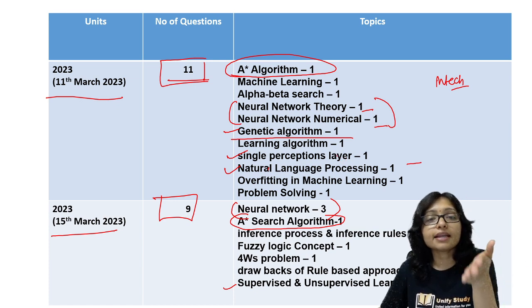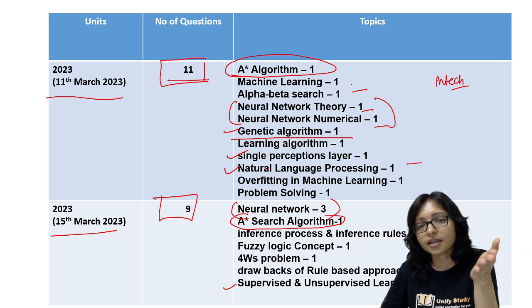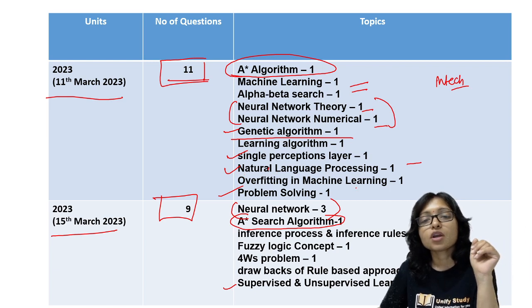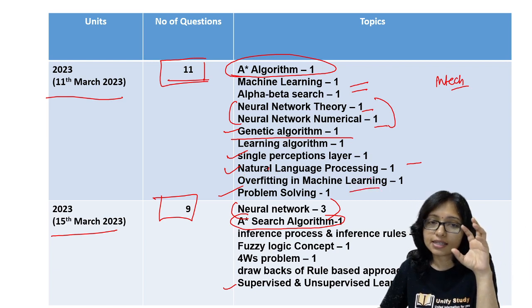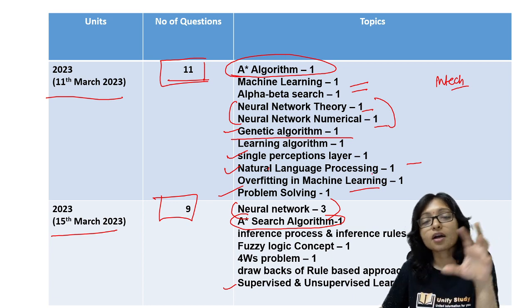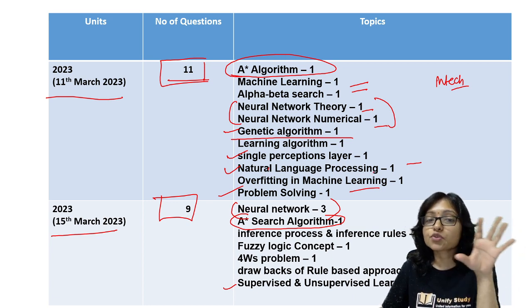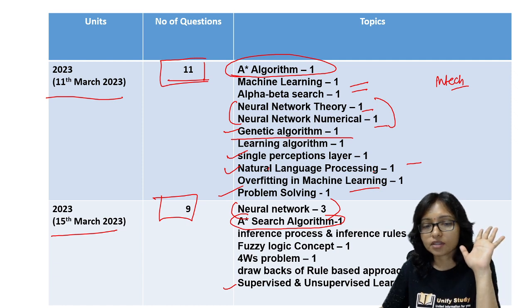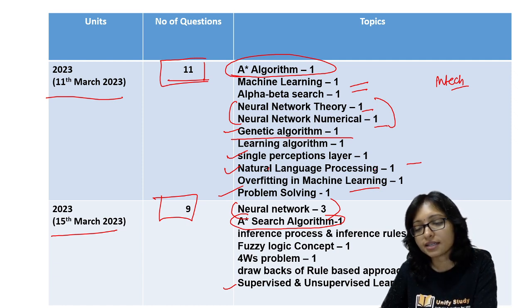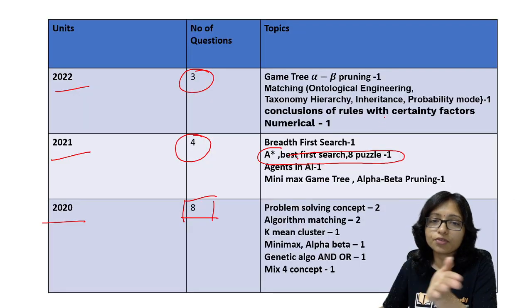And then the alpha-beta search, that is the technique, and machine learning - machine learning one question was there and problem solving normal question was there. So main focus is genetic algorithm, machine learning, neural network, and the different types of learning algorithms. This is a big focus you can see after the analysis, and previously also if you go to the previous questions then also you can see...